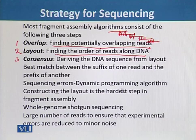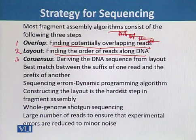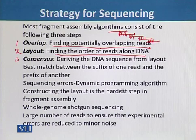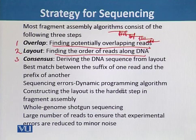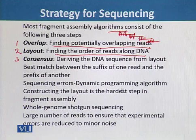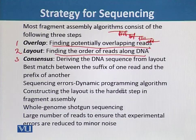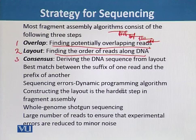However, sequencing errors force scientists to use a variant of the dynamic programming algorithm for sequence alignment, since errors range from one percent to three percent. The common practice is to filter out pairs of fragments that do not share a significantly long common substring. Constructing the layout is the hardest step in fragment assembly — the difficulty is in deciding whether two fragments truly overlap, or their differences are caused by sequencing error versus coming from two different copies of a repeat.